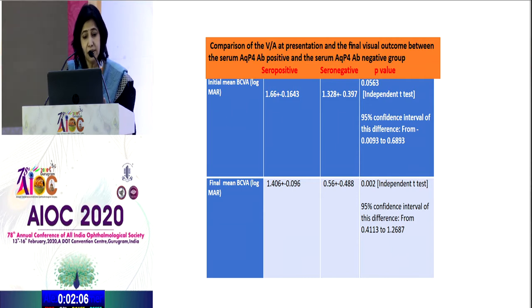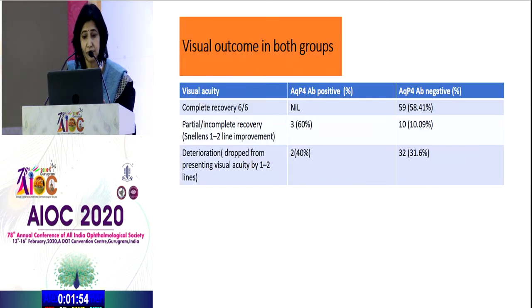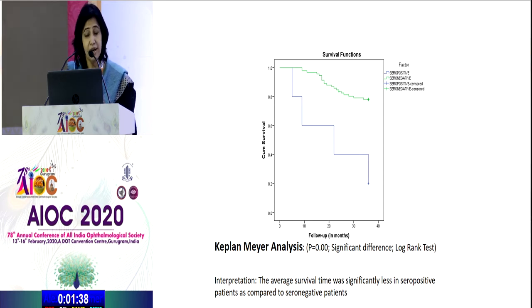Although the mean initial presenting visual acuity in both the seropositive and seronegative cases were comparable, at the end of follow-up more patients who were seronegative had better visual acuity than the seropositive cases, and this was significant. More patients who were seronegative had a complete recovery than the seropositive cases. This Kaplan-Meier analysis summed up the visual outcome — more patients with seronegative status had a visual acuity of at least 6/36 at the end of the study period, significant by log rank test.